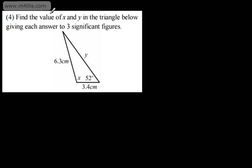This is question number four. We're asked to find the value of x and y in the triangle below, giving each answer to three significant figures. We have x, which is an angle, and y, which is a length. We're given 6.3 centimetres, 3.4 centimetres, and an angle of 52 degrees. I can't use the sine rule to directly find angle x, as I would need the opposite side.